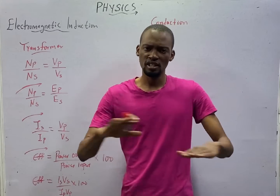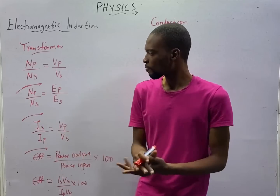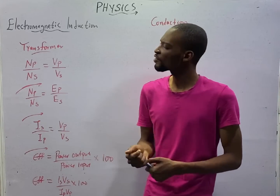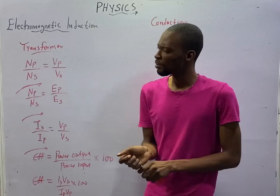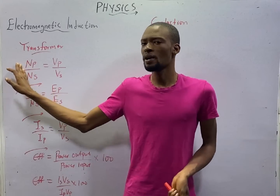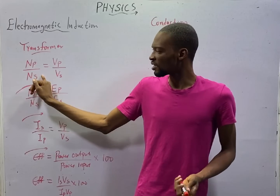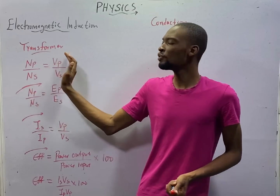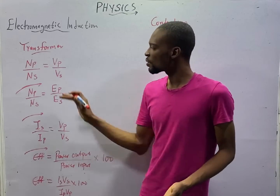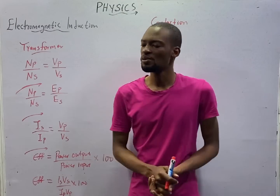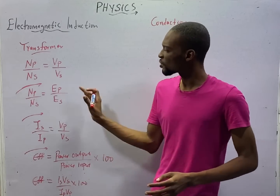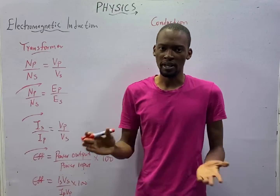Frequency does not change in a transformer — it works at the same frequency. These are the formulas you need to calculate or solve transformer problems. The first one is: number of turns in the primary over the number of turns in the secondary equals voltage in the primary divided by voltage in the secondary. If any of them is missing, make the missing one the subject of the formula and substitute the others you are given.